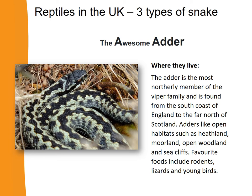First of all, let's look at the adder. Where do adders live? The adder is the most northerly member of the viper family, and it's found right up into Scotland. Adders like open habitats such as heathland, moorland, open woodland or sea cliffs.